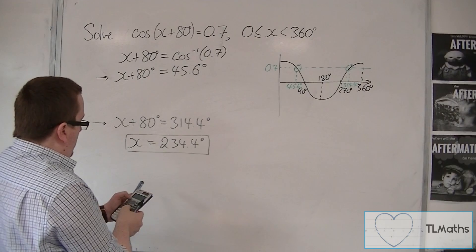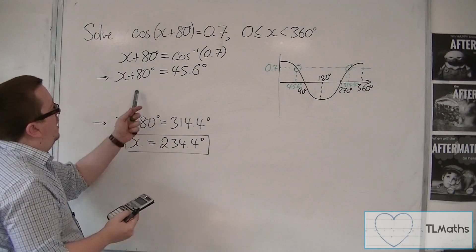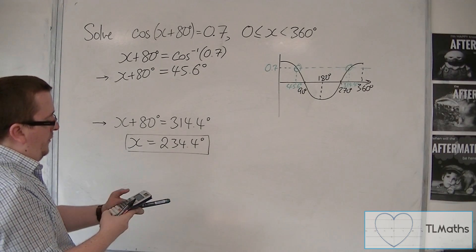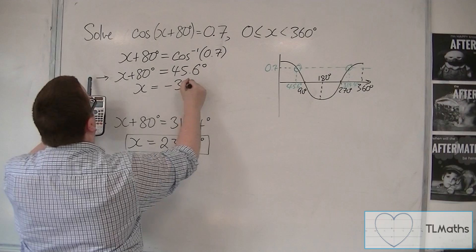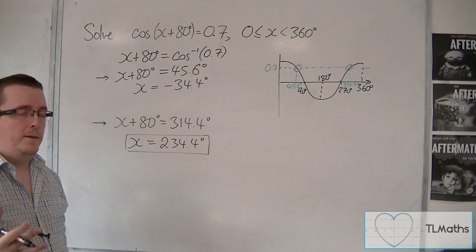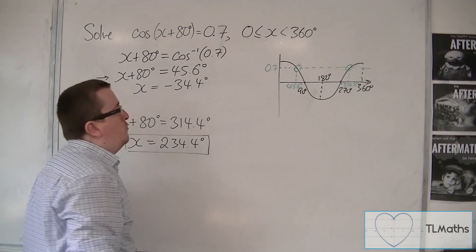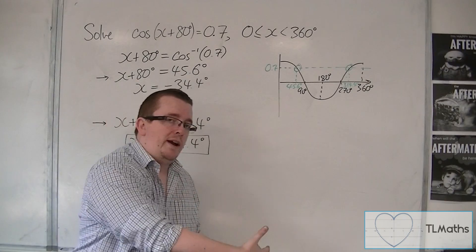Let's get back to this one. Inverse cos of 0.7 got me that 45.6. I'm going to take 80 from both sides, so that's going to leave me with x is minus 34.4 to one decimal place. Now, that is not between 0 and 360.